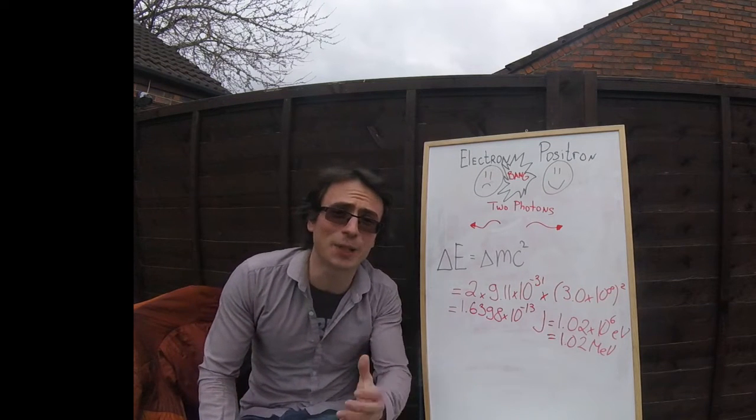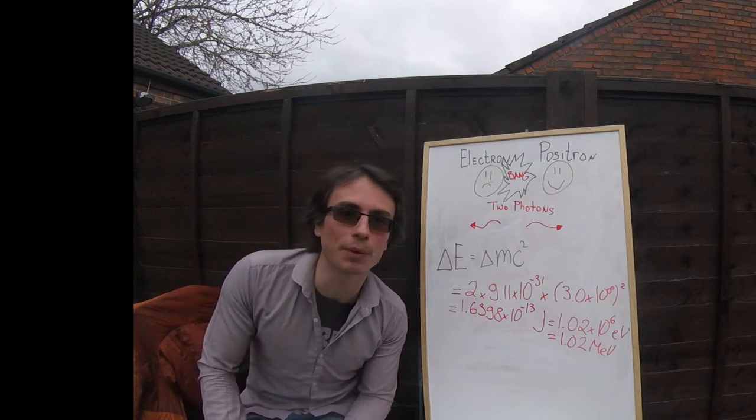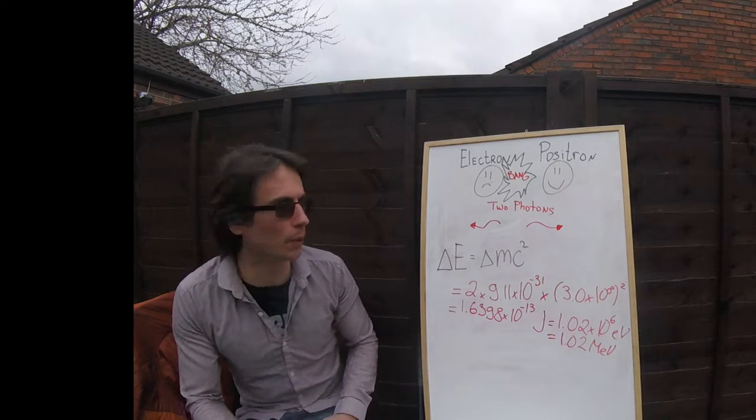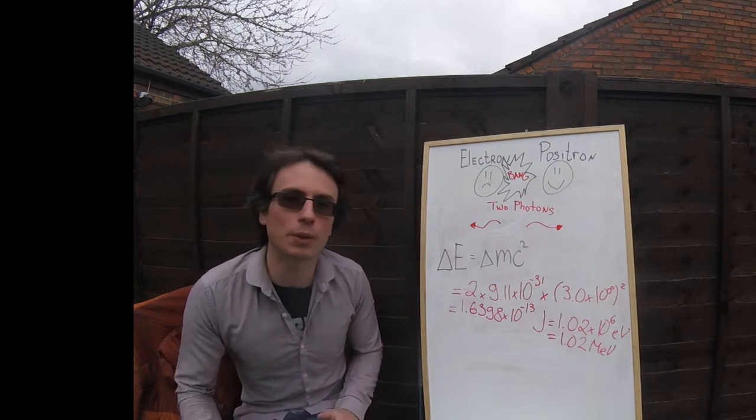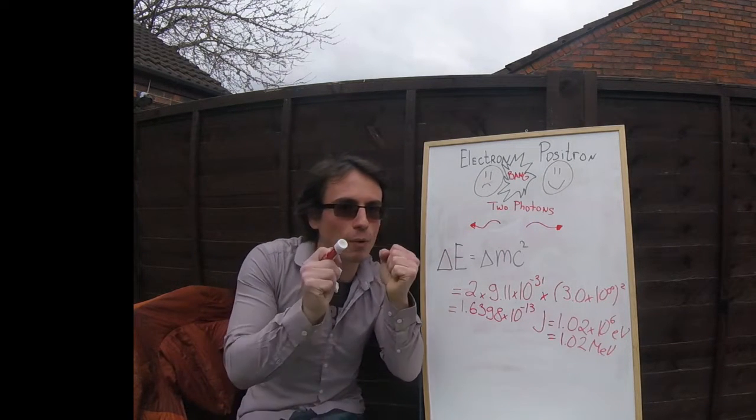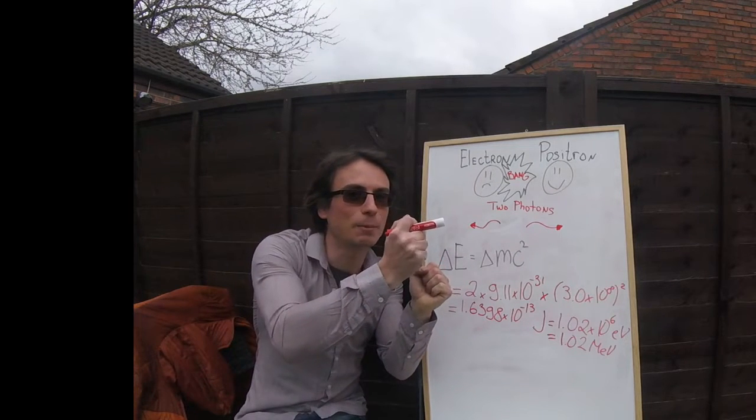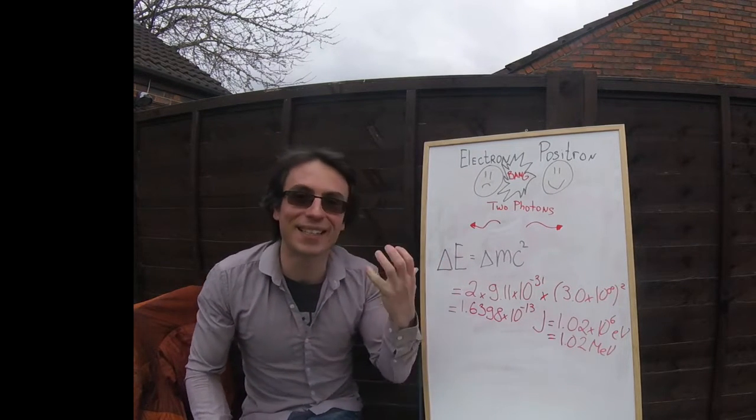We're going to be discussing annihilation. This is a fascinating process and I've got a little example of it right here on my board. We've got an electron which is ordinary matter which meets a positron which is antimatter. Now remember when antimatter and matter meet up you get annihilation.